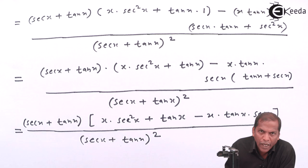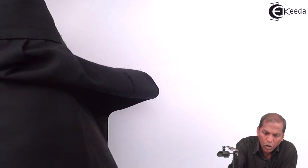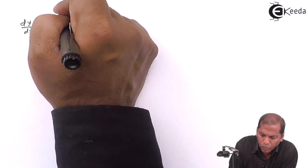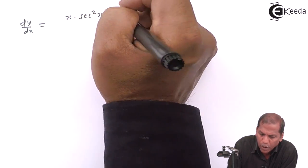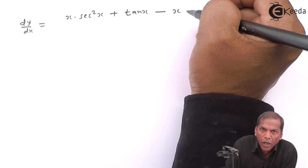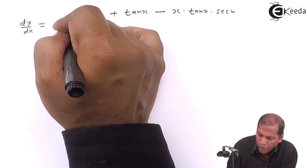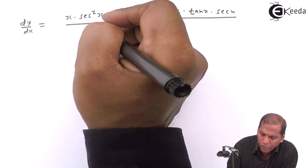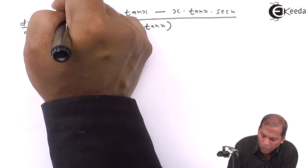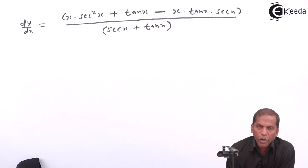Now we cancel sec(x) plus tan(x) from the numerator and denominator. So the final answer is: dy/dx equals x times sec²(x) plus tan(x) minus x times tan(x) times sec(x), the whole thing divided by sec(x) plus tan(x). This is the required solution for the given problem. Thank you.